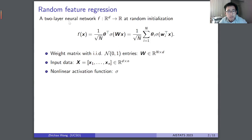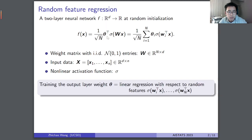We consider the random feature regression model generated from a two-layer neural network F at random initialization, where W, the first layer weight matrix, has i.i.d. Gaussian entries. Here X is the collection of all data points: n samples, N is the number of neurons in the first hidden layer (the width), sigma is the nonlinear activation function, and theta is the second layer. If we just train the second layer, it is a linear regression with respect to the random feature sigma(WX), which is what we call the random feature regression model.